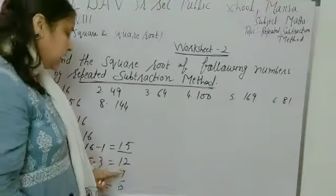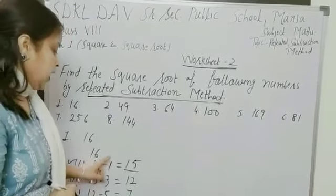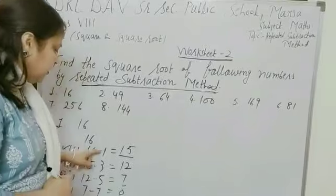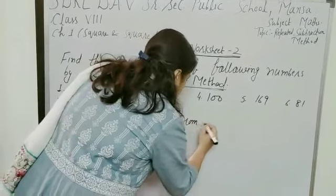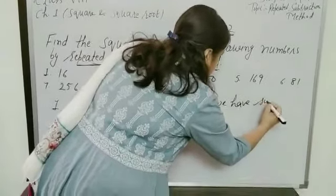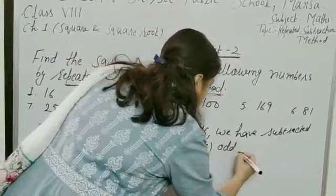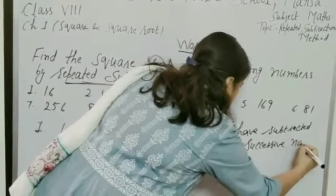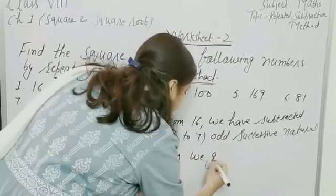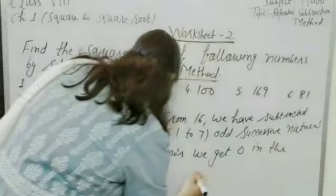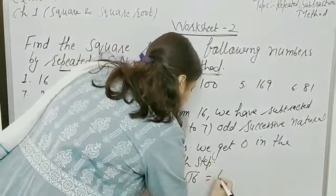And we obtained 0 in the fourth step — 1, 2, 3 and 4. In other words, we can say that we have subtracted 4 odd natural numbers from the given number. Therefore, our answer will be 4. From 16, we have subtracted 1, 3, 5, 7 — successive odd natural numbers — and we get 0 in the fourth step. Therefore, square root of 16 will be equal to 4.